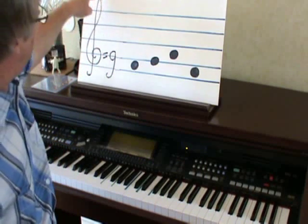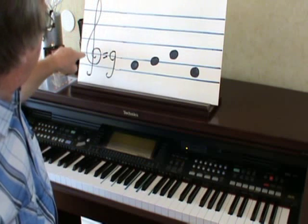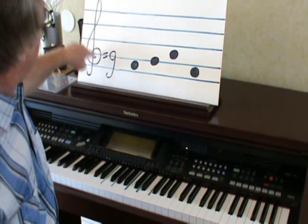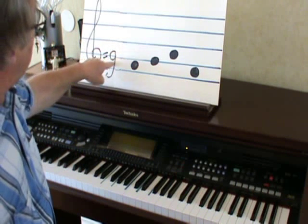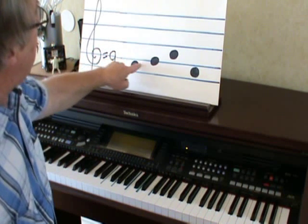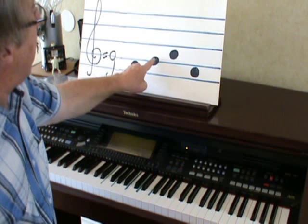And they're marked with what they call a treble clef. And all a treble clef is, is a very posh letter G to show you that that line, see it hanging around that line? Look, it's just a letter G that hangs around the second line. So we know that that note there is G.